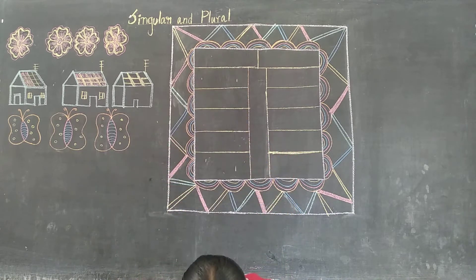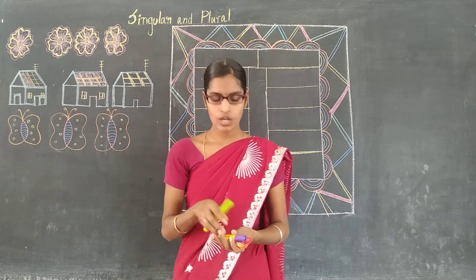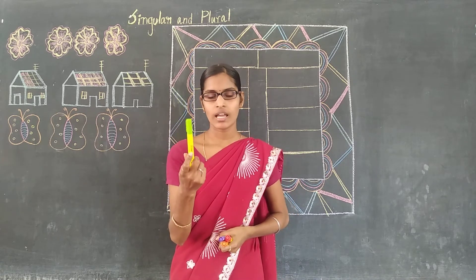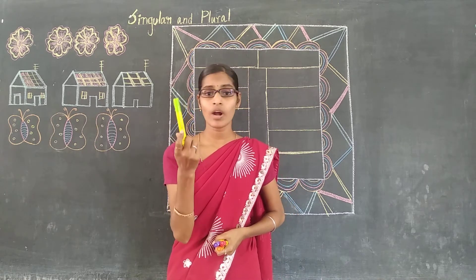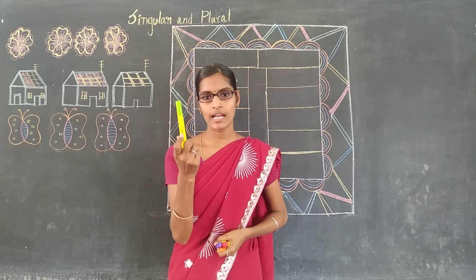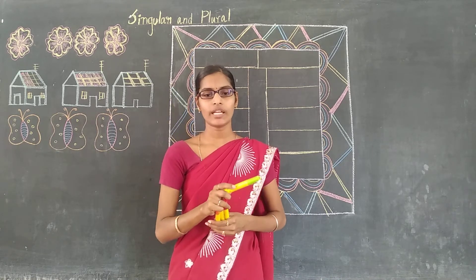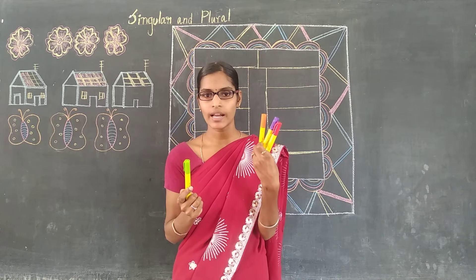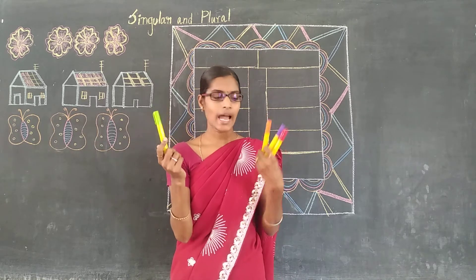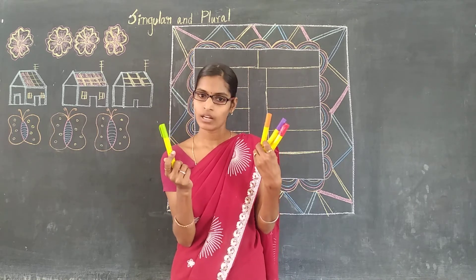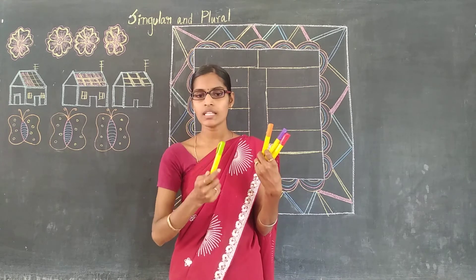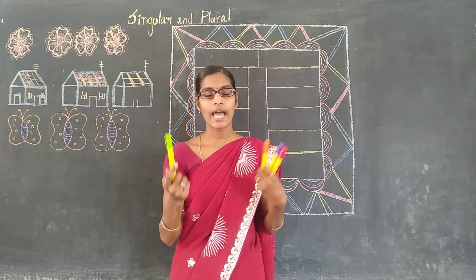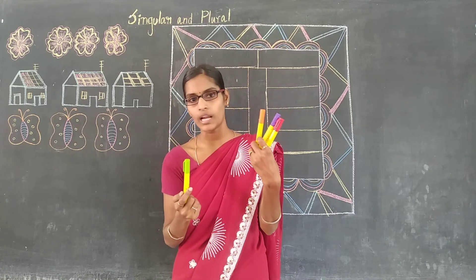Before that, just look at this. It is a marker, right? I am having only one marker in my right hand. In my left hand, the other hand, I am having three markers. This is only one and this is more than one. Then this is called the singular and plural. Only one means singular and more than one means plural.